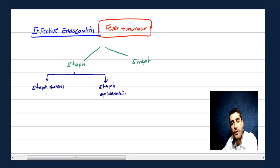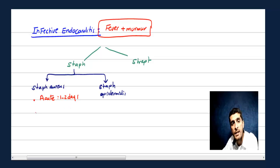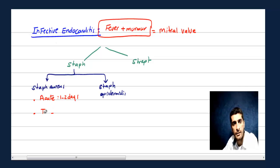When talking about Staph aureus, remember: first, it's usually acute infective endocarditis, not subacute — so one to two days of high fever, within 48 hours. Second, mitral valve is the most common valve. However, in Staph aureus it could be the tricuspid valve because it's associated with line infections.